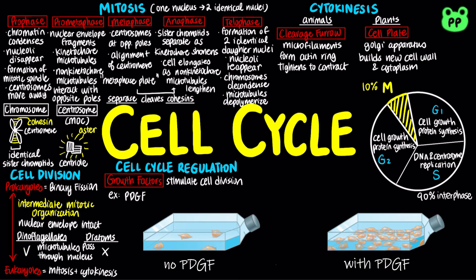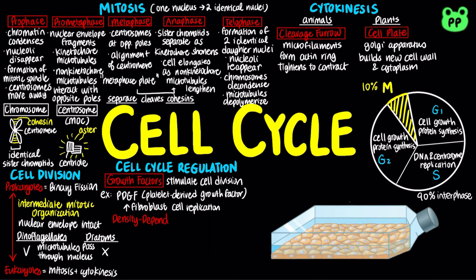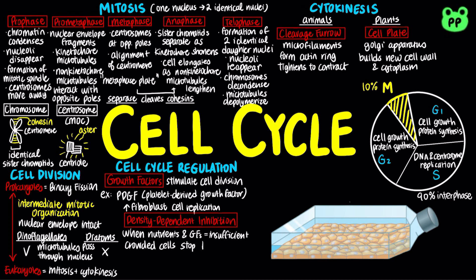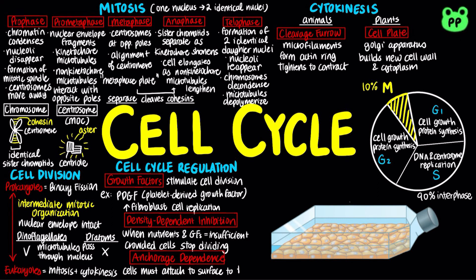Growth factors are proteins released by certain cells that stimulate other cells to divide. For example, platelet-derived growth factor, abbreviated as PDGF, stimulates the division of human fibroblast cells in culture. Density-dependent inhibition occurs when the amount of nutrients and growth factors are insufficient, preventing crowded cells from dividing. Most animal cells also exhibit anchorage dependence, in which they must attach to a surface in order to divide.